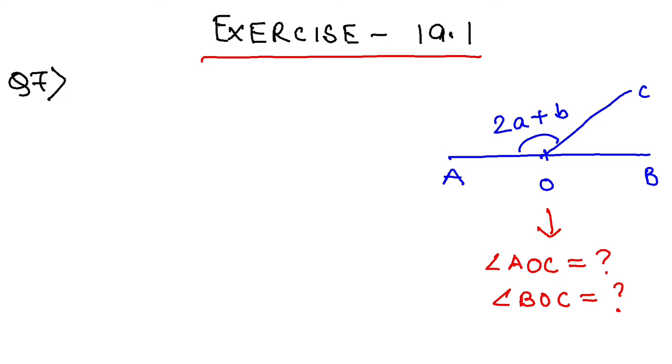Two more statements are given. First, 2a minus 3b equals 10 (I'm ignoring the degree symbol for now). Second, a minus b equals 20.